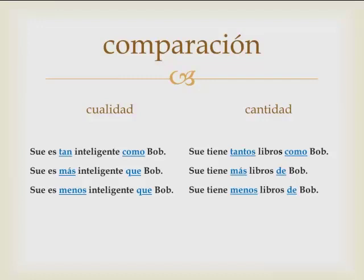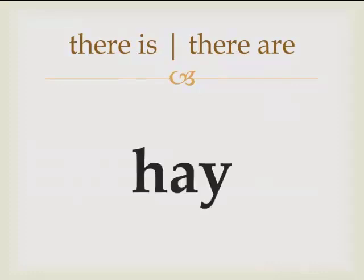That's the main part of the lesson — to show the comparison between either a quality or a quantity. With cantidad, we're often going to use the verb tener, 'to have,' showing that you have a certain number of things. Whereas with cualidad, we're often going to use the verb es, comparing two qualities of a person, place, or thing. You can also use the word hay, meaning 'there is' or 'there are.' Note: you don't pronounce the H in Spanish, so it's said as 'hay.'